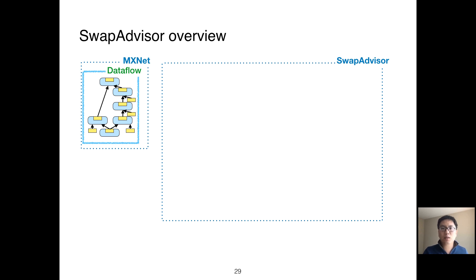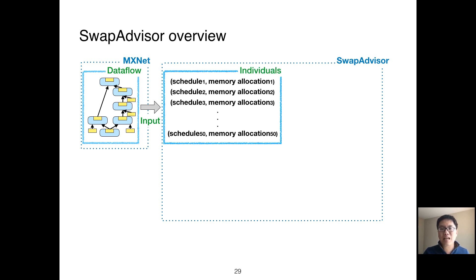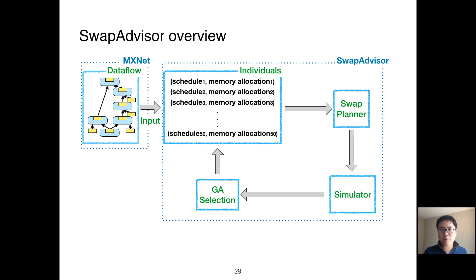These figures show the overview of SwapAdvisor. SwapAdvisor takes the dataflow graph and memory usage from a deep learning framework as input. We first randomly generate a bunch of schedules and memory allocations based on the input. We call these individuals or a population of candidate solutions. The results are fed into the SwapPlanner to derive the swapping strategy for each pair of schedule and memory allocation. We evaluate the performance of each pair with a simulator. The results are fed into the genetic algorithm selection to decide which pairs are good to survive to the next round of search.